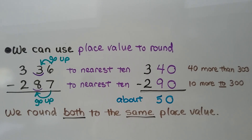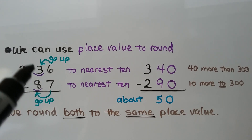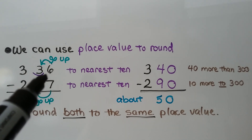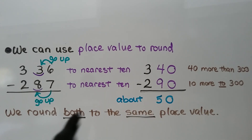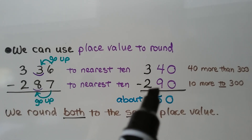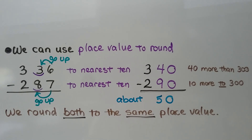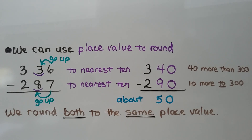We can also use place value to round. If we have 336 and we want to subtract 287, we could round them to the nearest tens place. We mark the tens place to pay attention to which place value we're rounding. The digit 6 to the right tells the 3 to go up to a 4, then it becomes a 0, so 336 rounded to the nearest ten is 340. For 287, the 7 tells the 8 to go up to a 9 and the 7 becomes a 0, so 287 rounded to the nearest ten is 290. 340 minus 290 is about 50.